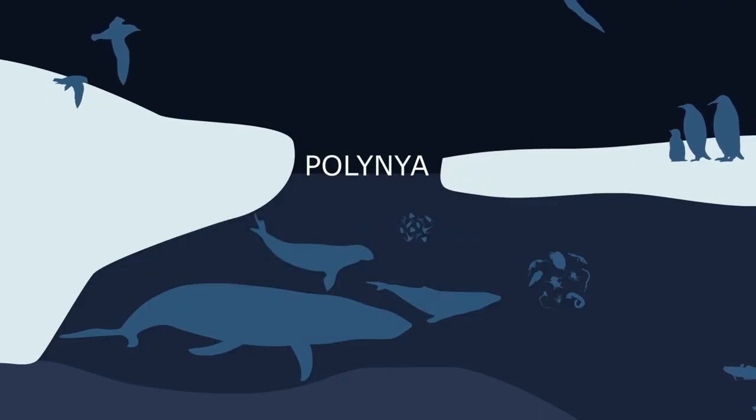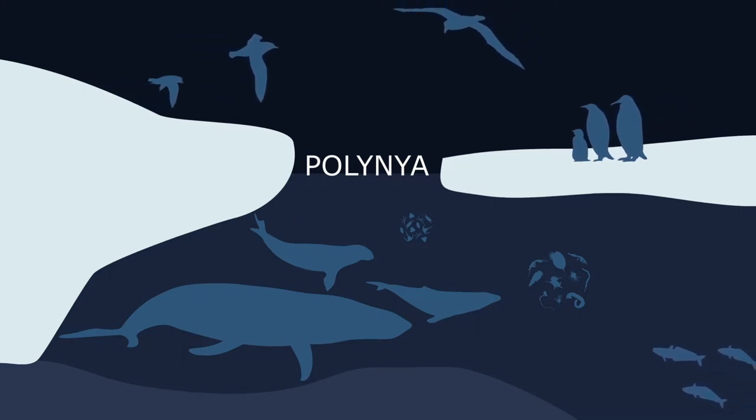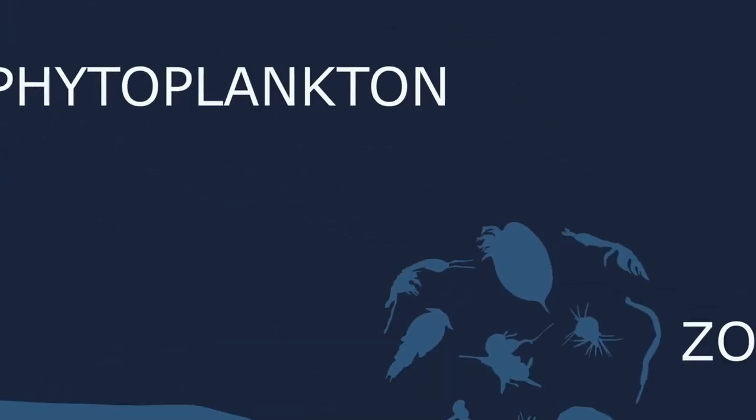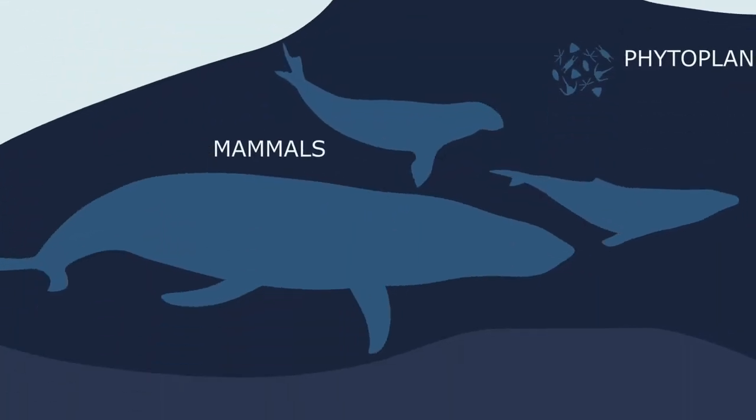Because they are ice-free, coastal polynias are also oases of the Antarctic coastal ecosystem. They harbour many marine species, including plankton, fish, birds and mammals.